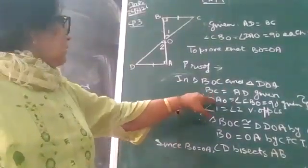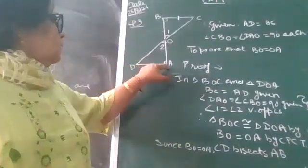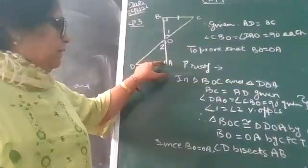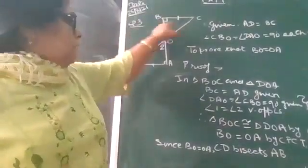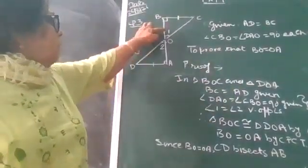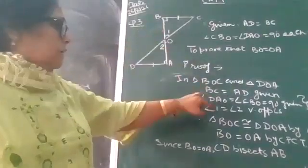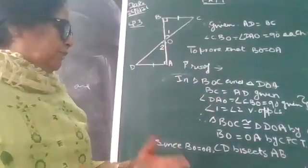Angle DAO, this angle is given as 90 degrees and CBO angle is also given as 90 degrees. And angle 1 equals angle 2, these are vertically opposite angles.